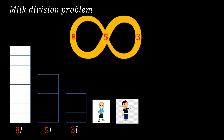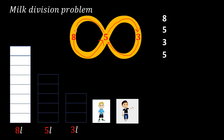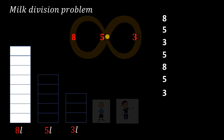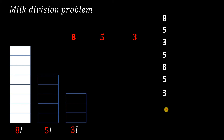Now I start to move along the infinity path from eight to five, writing the numbers as I go. I write eight, then move to five and write five, then continue along the path to three, then back to five, then from five to eight, again from eight to five, from five to three, and from three to five, and so on. This gives us our sequence of numbers along the infinity path.